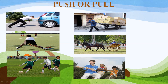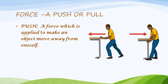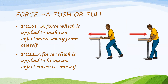In all these pictures some force is being applied by the persons, whether in the form of push or pull. We come to a common understanding: we use the term push if we are trying to move the object away from us, and we use the term pull if we are trying to move the object towards us. The definition of push is: a force applied to make an object move away from oneself. The definition of pull is: a force applied to bring an object closer to oneself.